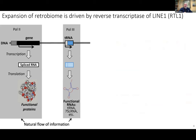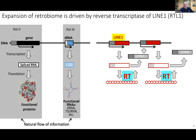How does this work? There are two major classes of genes transcribed by RNA polymerase 2 and RNA polymerase 3. RNA polymerase 2 transcribes RNA from protein-encoding genes. RNA polymerase 3 is used for synthesis of service RNAs such as tRNA and 7SL RNA. This is the normal flow of genetic information, starting from DNA and ending with either protein or functional RNA.